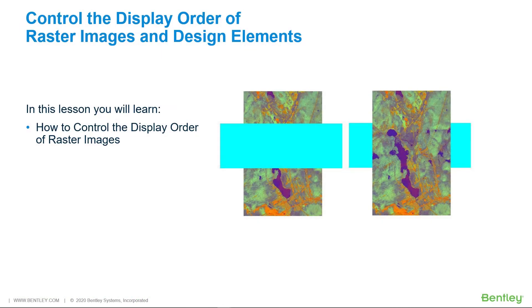You can control the display order of raster images by changing their plane, or when they're in a design plane, by changing their display priority. In this lesson, you will learn how to control the display order of raster images and design elements.